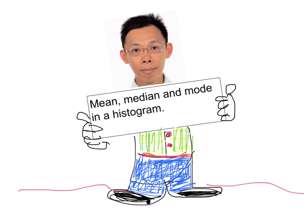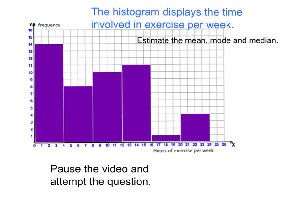Welcome to another lesson with Ming. Today we talk about mean, median, and mode in a histogram. We start the lesson with looking at an exercise and study this histogram. It tells you the number of hours that people exercise per week, and our task is to estimate the mean, mode, and median. You may want to pause the video and attempt this question before replay.